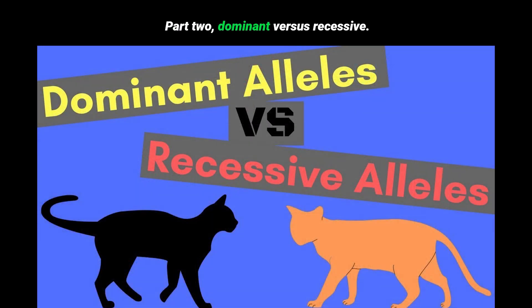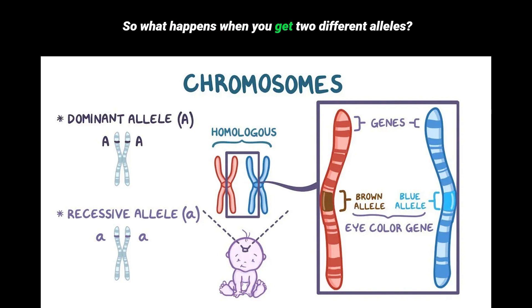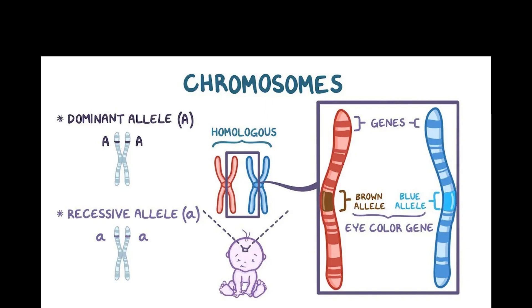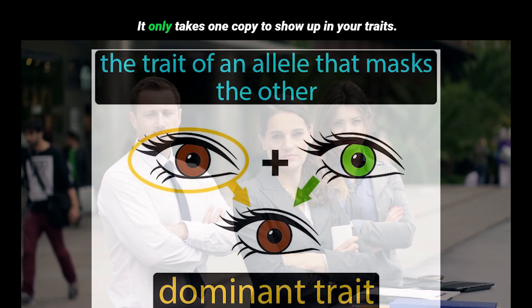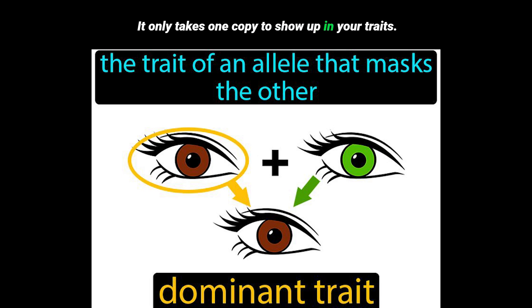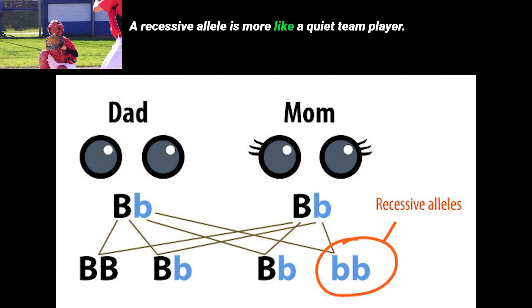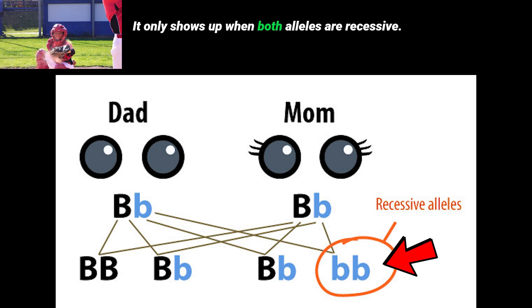Part 2: Dominant vs. Recessive. So what happens when you get two different alleles? That's where dominant and recessive alleles come in. A dominant allele is like a bossy leader — it only takes one copy to show up in your traits. A recessive allele is more like a quiet team player; it only shows up when both alleles are recessive.